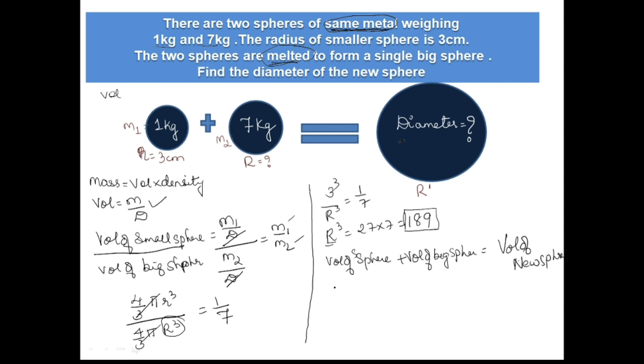Check out children, in this step I'll take 4/3 π common. 4/3 π (small r³ + capital R³) equal to 4/3 π r'³, which we have to find out. Cancel 4/3 π. Here r is 27, and R³ is 189.